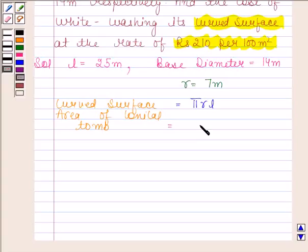Curved surface area of conical tube is equal to πRL. Now substitute the value of π, R, and L. π is equal to 22/7, R is equal to 7, L is equal to 25 meters, and this is equal to 550 square meters.